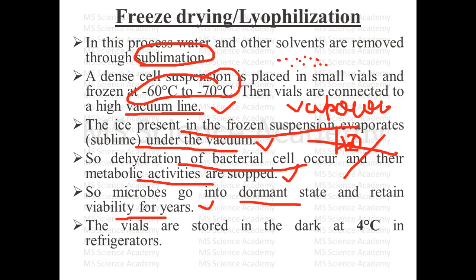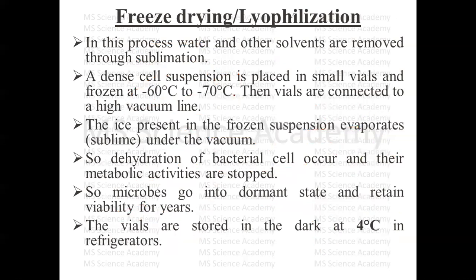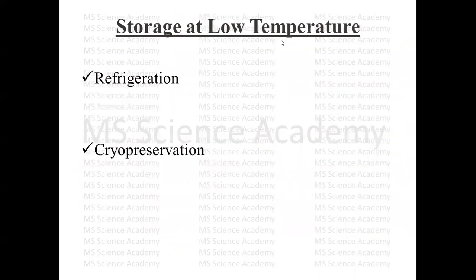Is tarah ke solution ko hum chhote-chhote vials mein store karte hain — jaise injection wali chhoti kaanch ki vials hoti hain. Ya to hum isko refrigerator mein bhi store kar sakte hain. Summary of freeze drying: sabse pehle minus 60 se minus 70 degree Celsius tak thanda kiya, phir vacuum par touch kiya.